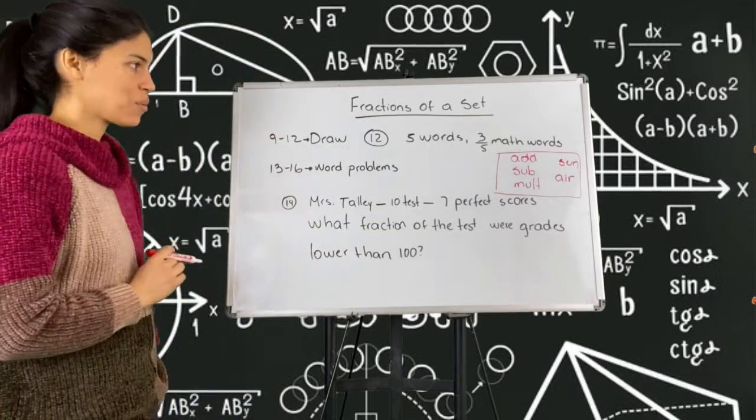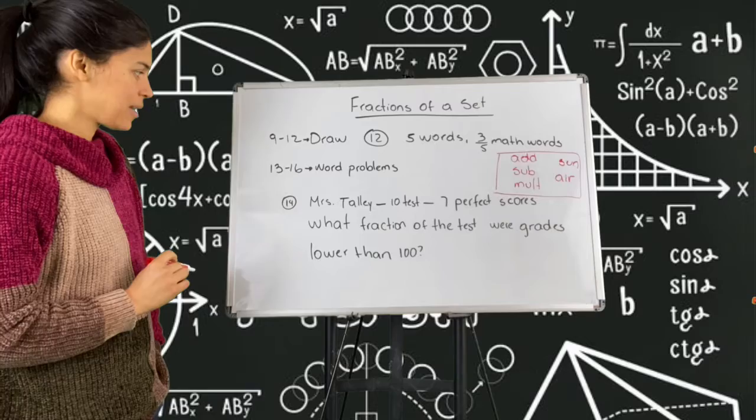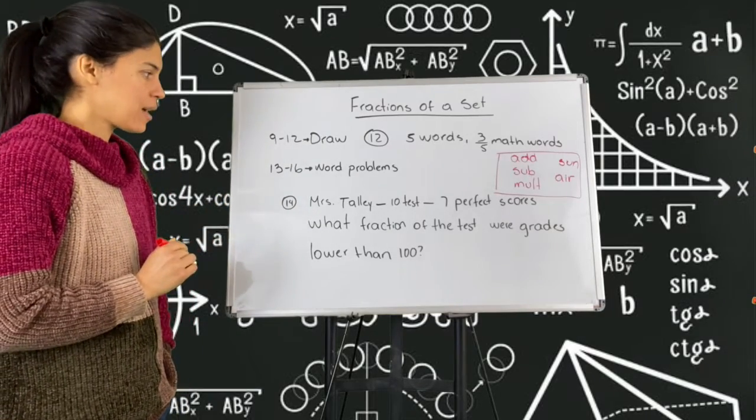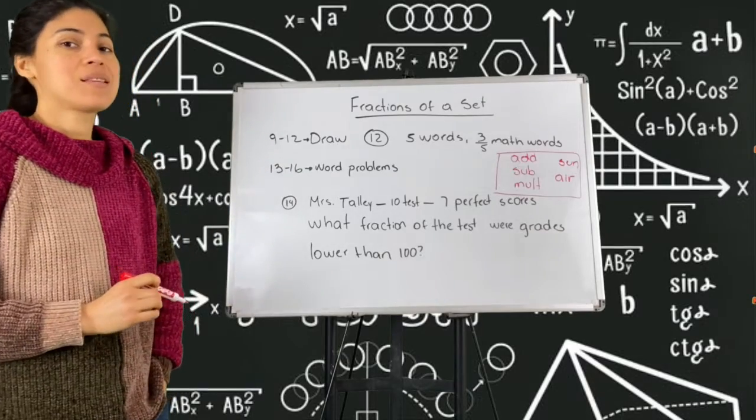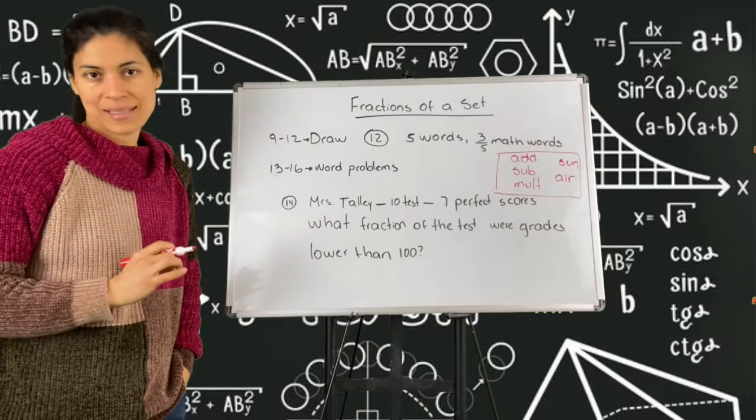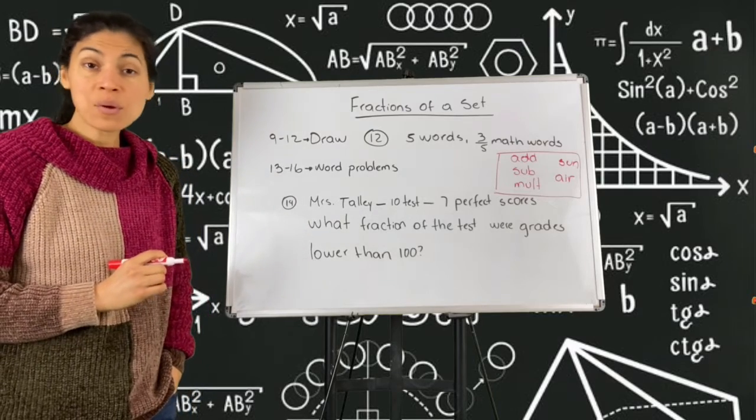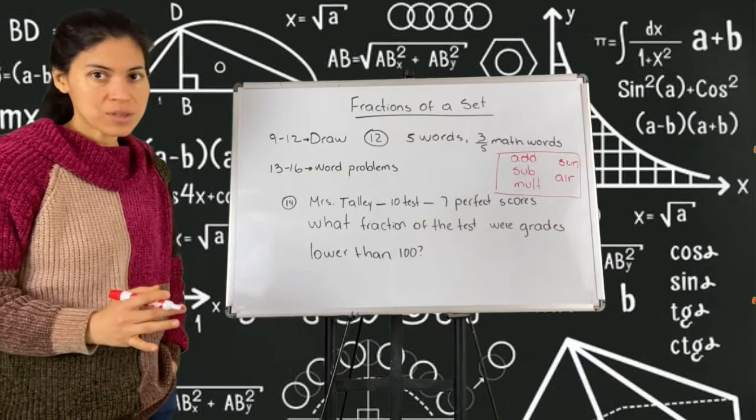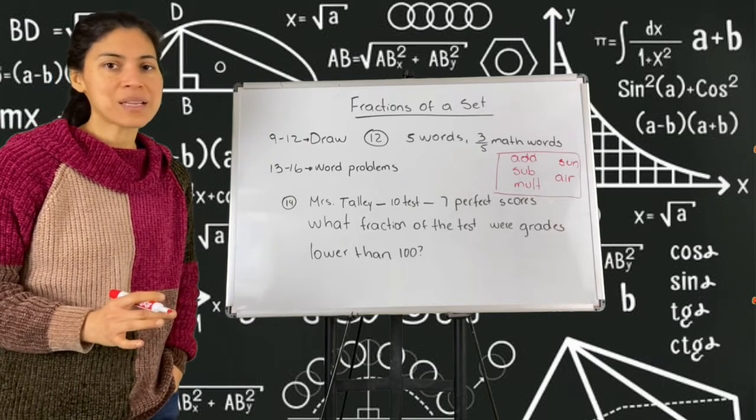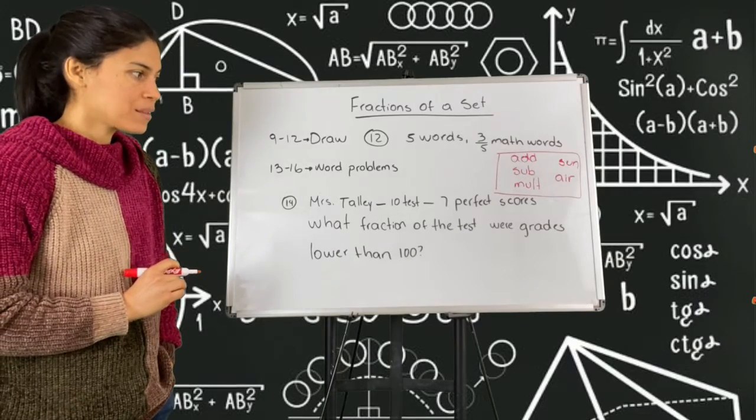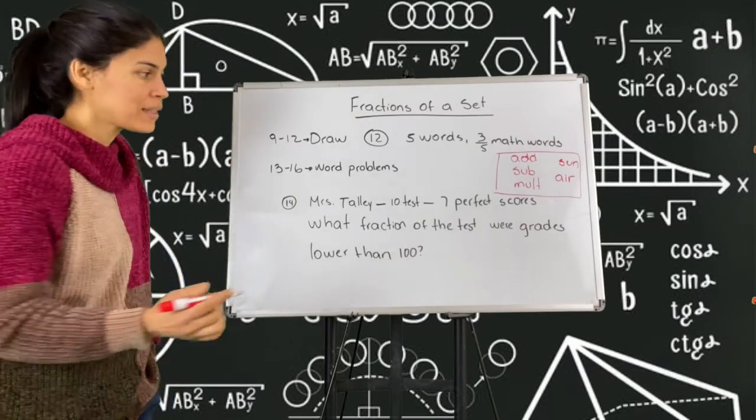Go ahead and work on those. And number 13 to 16 is word problems. I'm going to do number 14. Number 14 says that Mrs. Daly graded 10 tests before lunch and of those 10 tests, seven were perfect scores. The question is, how many of those tests have grades that are lower than 100 percent? So I know that perfect score is 100, needs to be 100.